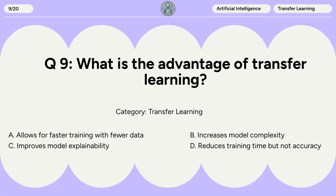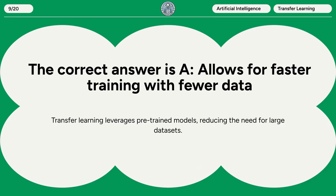Question 9. What is the advantage of transfer learning? A. Allows for faster training with fewer data. B. Increases model complexity. C. Improves model explainability. D. Reduces training time but not accuracy. The correct answer is A: allows for faster training with fewer data. Transfer learning leverages pre-trained models, reducing the need for large datasets.